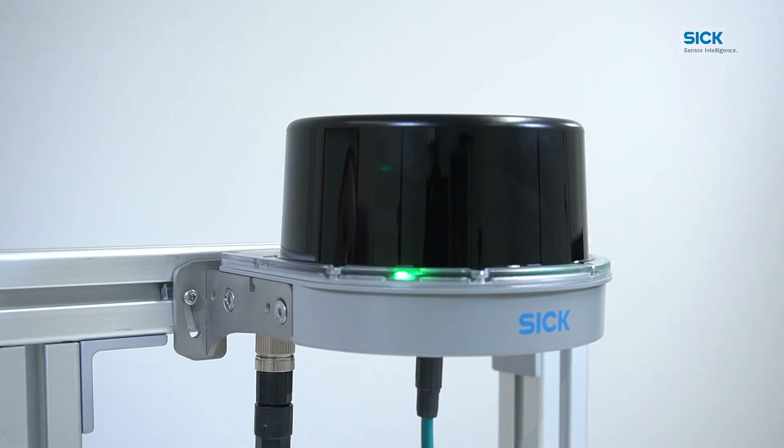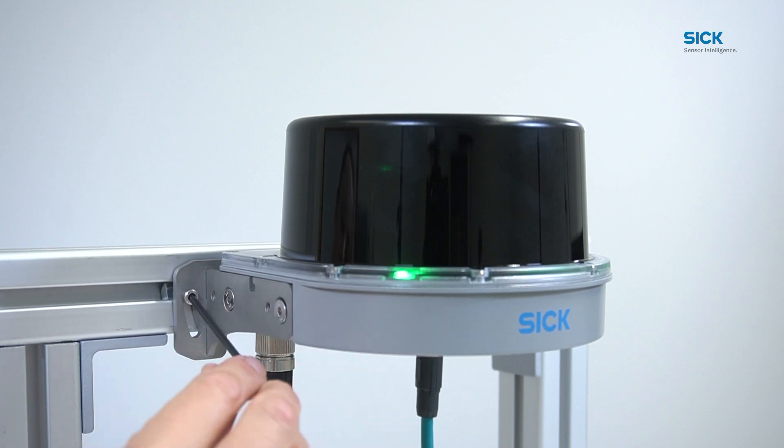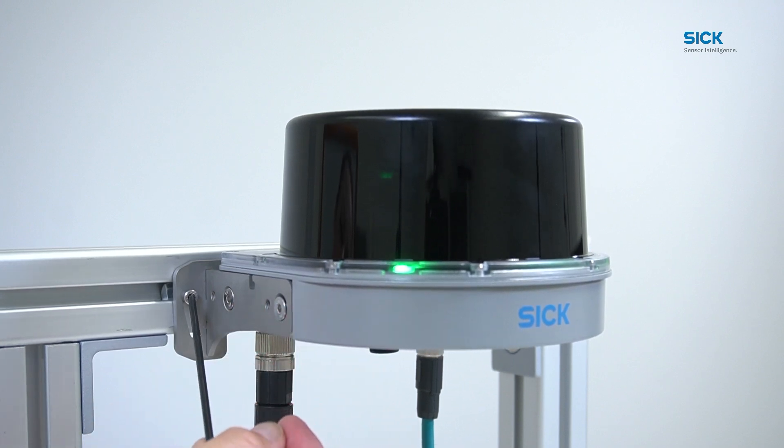Now align the sensor according to the specific recommendations in the operating instructions. The screws for wall mounting can then be tightened firmly. The sensor is now securely attached to the mounting kit 1A.